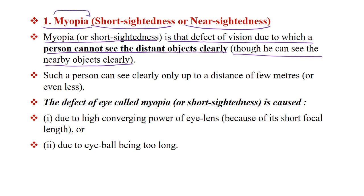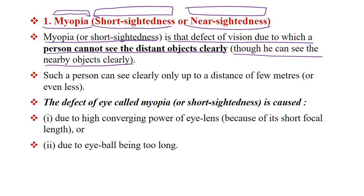In Myopia, the alphabet used is small, so its name is short-sightedness. Its second name is near-sightedness. This means you can see nearby objects clearly but cannot see distant objects clearly. You should not be confused — short-sightedness does not mean there is a problem seeing nearby objects. The problem is with distant objects. That is what we call Myopia.